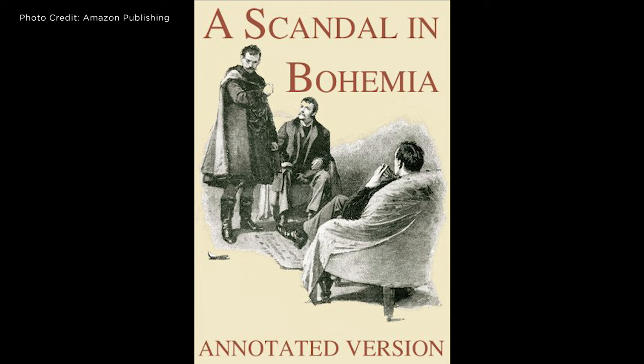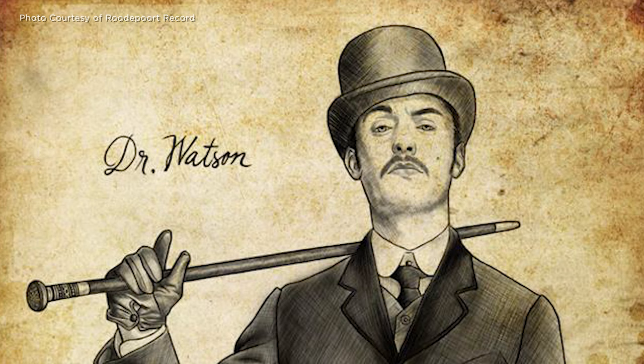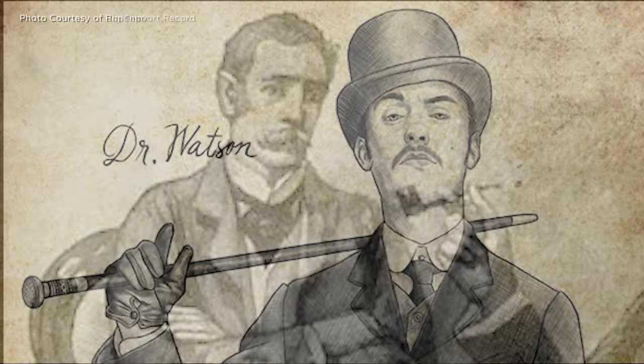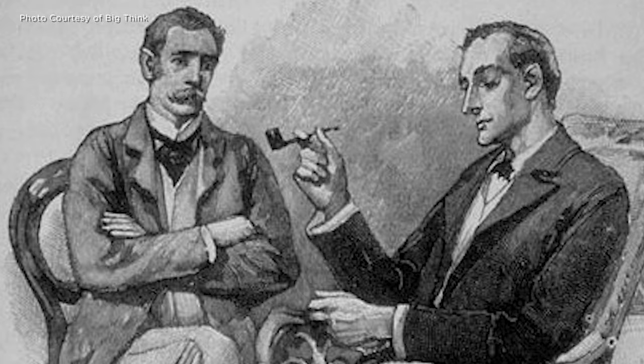The initial tale in that series, A Scandal in Bohemia, is one of the major inspirations for Moriarty. By 1927, Conan Doyle had written 56 short stories and four novels. Most of these tales are narrated by another well-known Conan Doyle creation, Dr. John Watson.